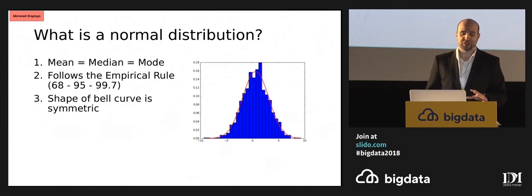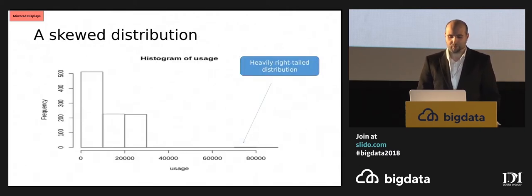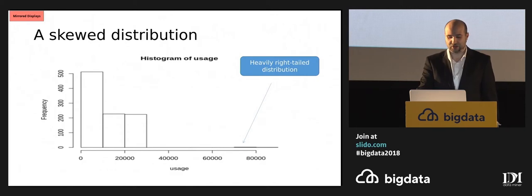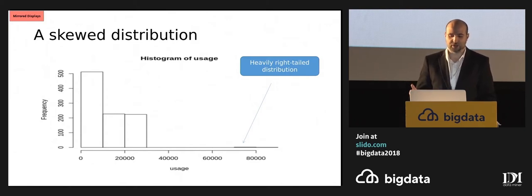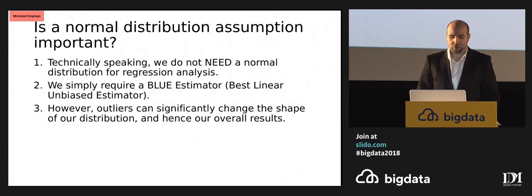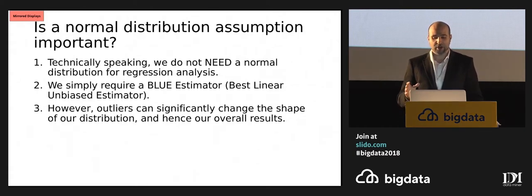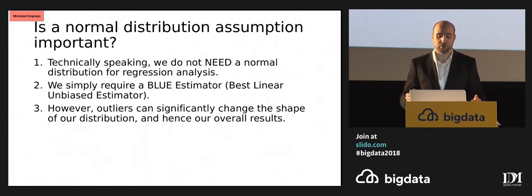The long and short of it is, it's a common misconception that we need a normal distribution — we don't necessarily need one to run a regression analysis. But that doesn't take away from the fact that when we generate the distribution with significant outliers, as you can see, we have a heavy right-tailed distribution, which has heavily skewed our distribution. All we simply need is a BLUE estimator — a best linear unbiased estimator — however, outliers significantly change the shape of our distribution and hence the overall results.